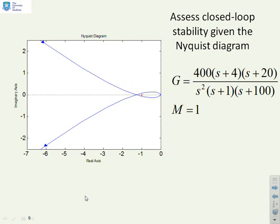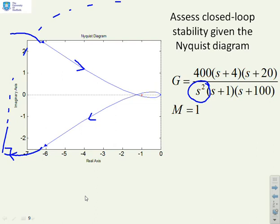Next example: assess the closed loop stability given the Nyquist diagram and GM. This one is not as simple as it looks because it has a double integrator. The Bode diagrams go off into the minus 180 degree direction, so you must do a complete plot all the way to the asymptotes. Add the right-hand turns, go 360 degrees at infinity for the double integrator, add another right-hand turn, and come back in to complete the Nyquist diagram.